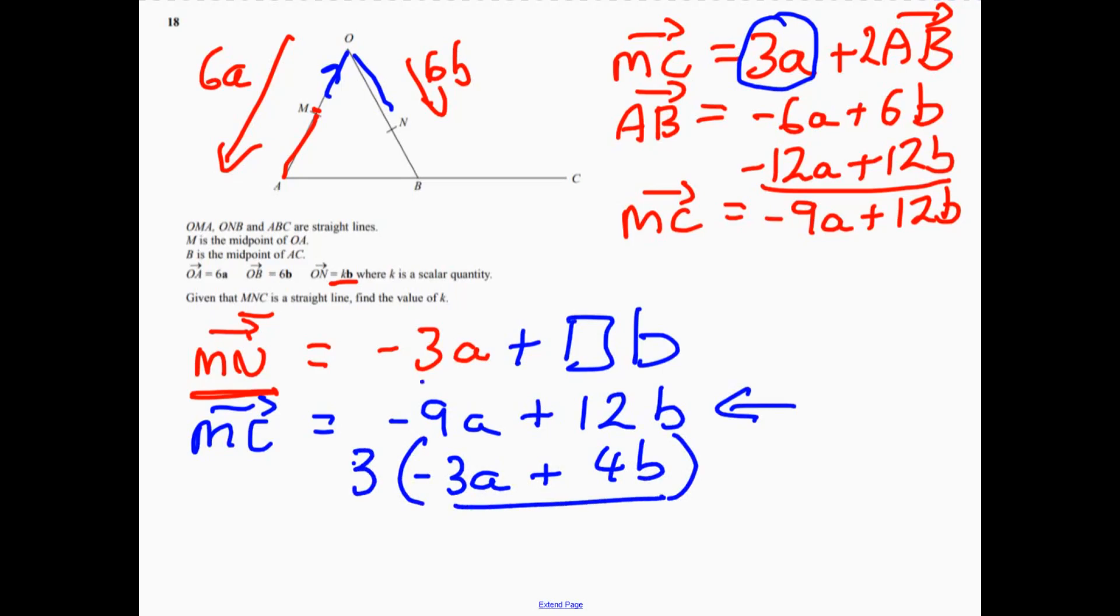It's minus 3a plus 4b multiplied by 3. That bit and that bit. Look at that part. Must be that bit. So K equals 4.